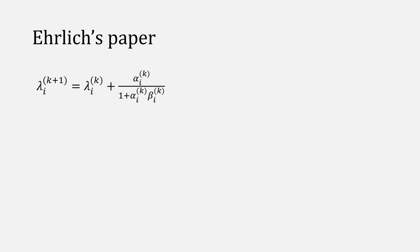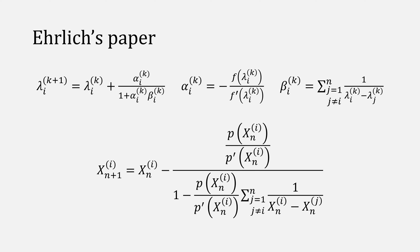Ehrlich uses this formula, where lambda is our approximation, alpha is the negative Newton step, and beta is that summation of where all the roots are currently at. You can write more generally like this, but still, this doesn't give a whole lot of intuition as to where this equation comes from. For that, we'll need to do a deeper dive.